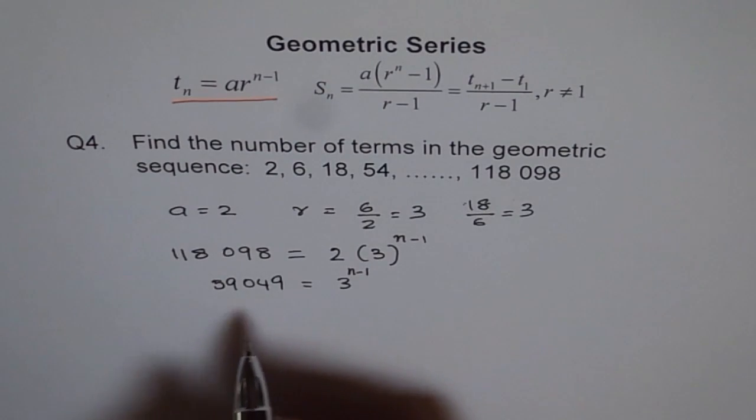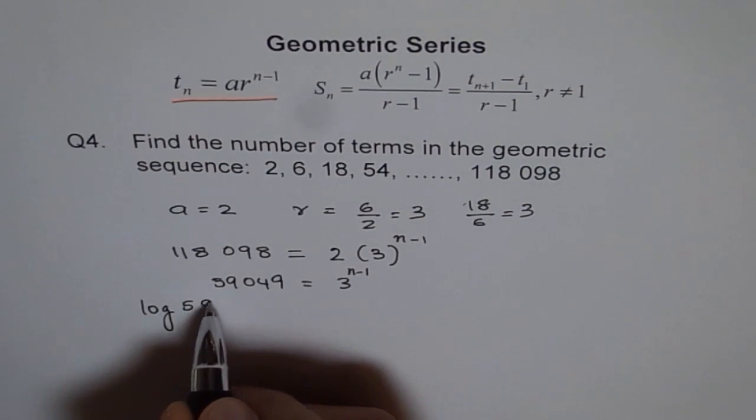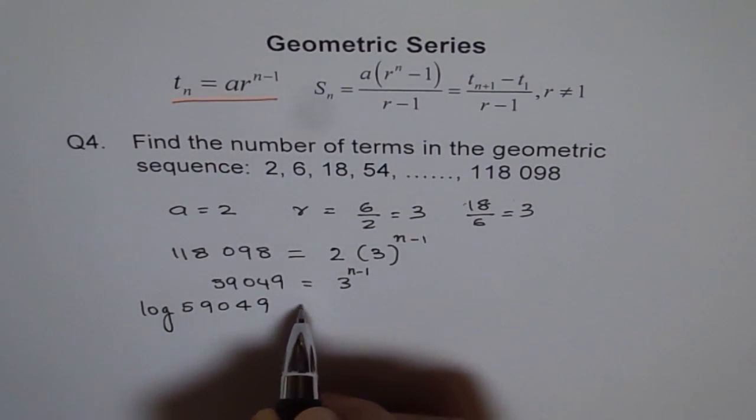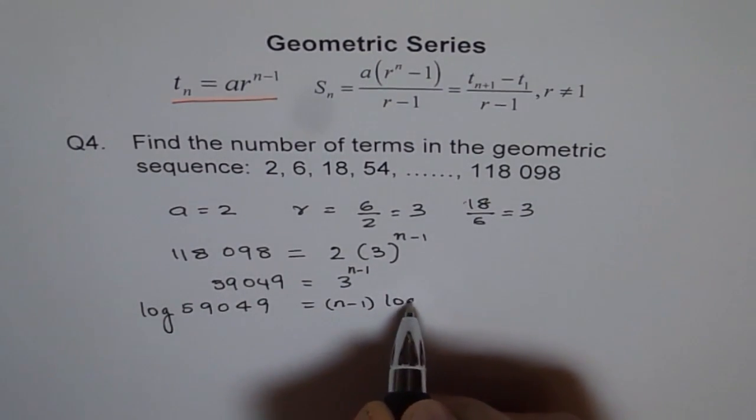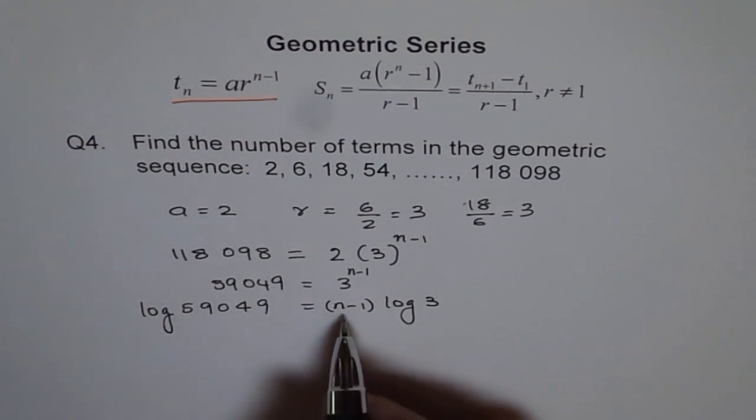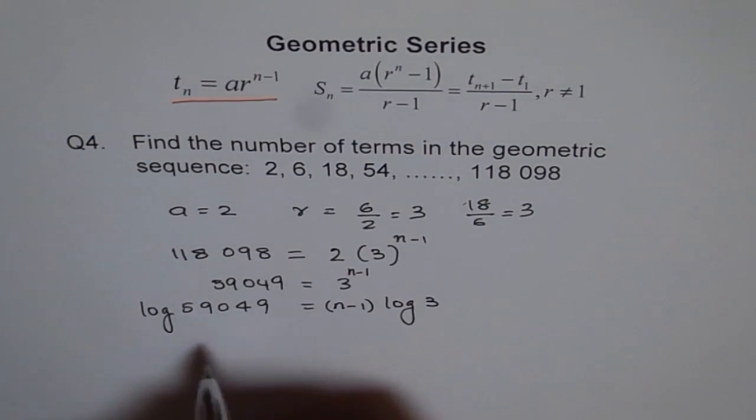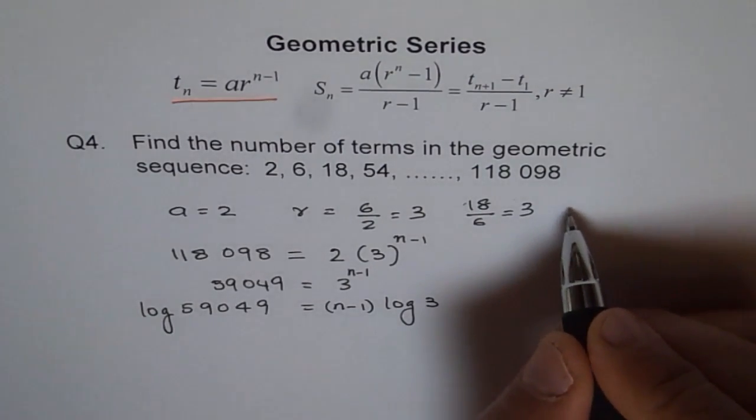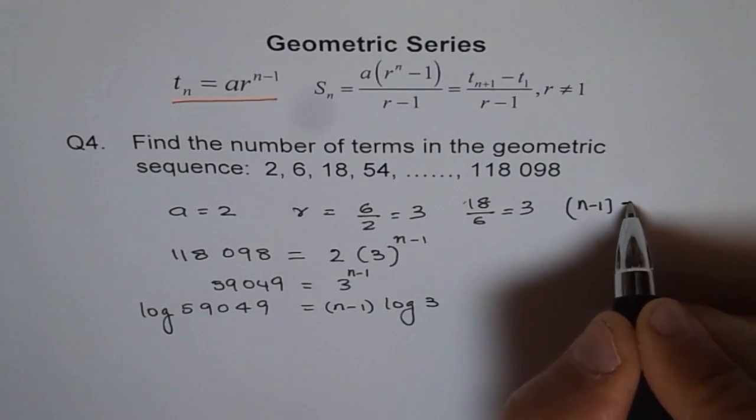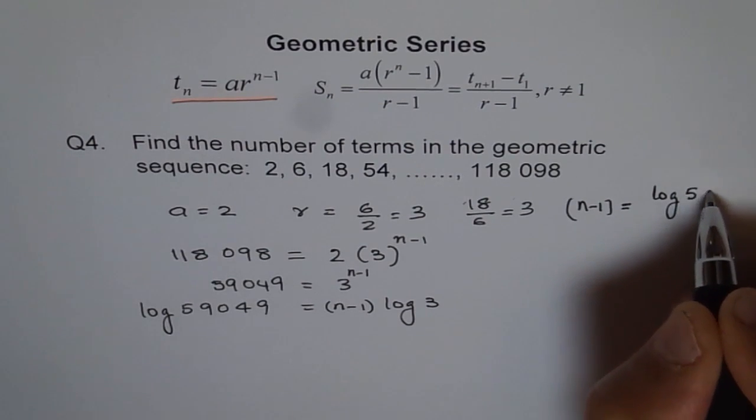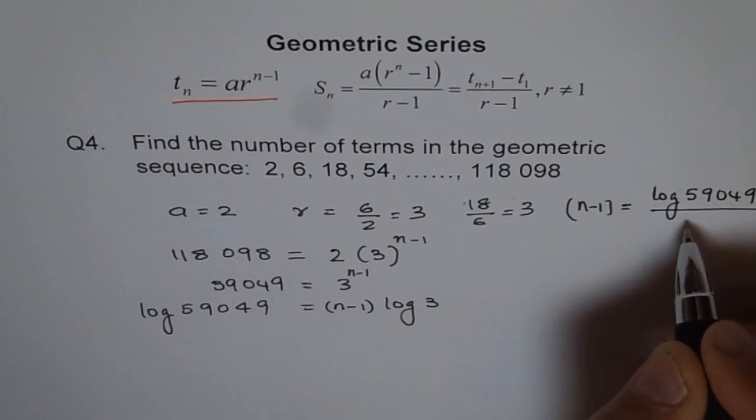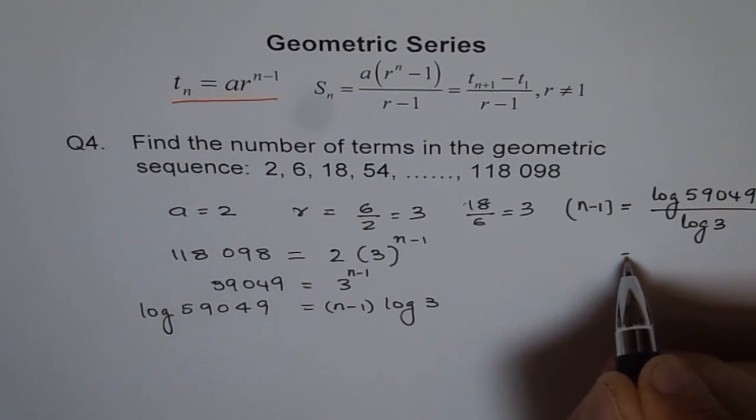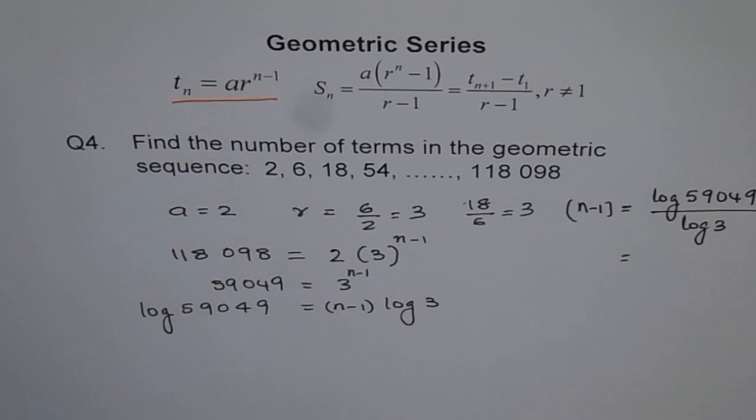Now we will take log both sides. So we see log of 59,049 equals to n minus 1, log of 3. And n minus 1 is equal to ratio of, so let's do it here. n minus 1 is equal to log of 59,049 divided by log of 3, which is equal to log of 59,049 divided by log of 3. So we get 10.